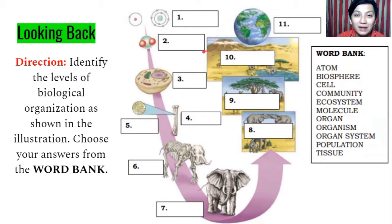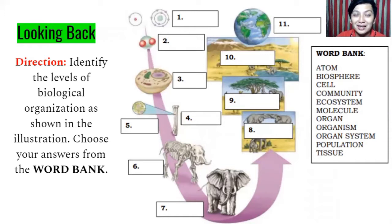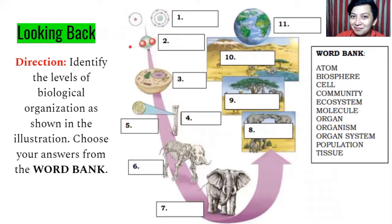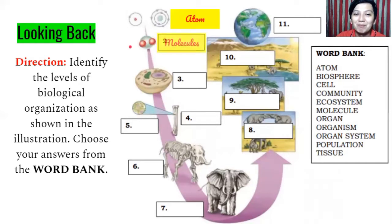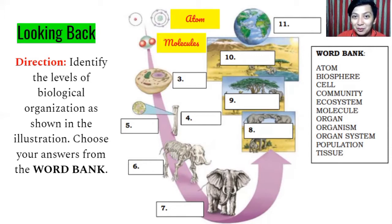We have the very tiny or minute thing that we call atom. This is not starting with the biological. When we are going to start with the biological levels of organization, it all started with cells. Atoms and molecules can be living things or non-living things. Group of atoms is called molecules. When we are going to talk about living things, group of molecules can compose a cell.